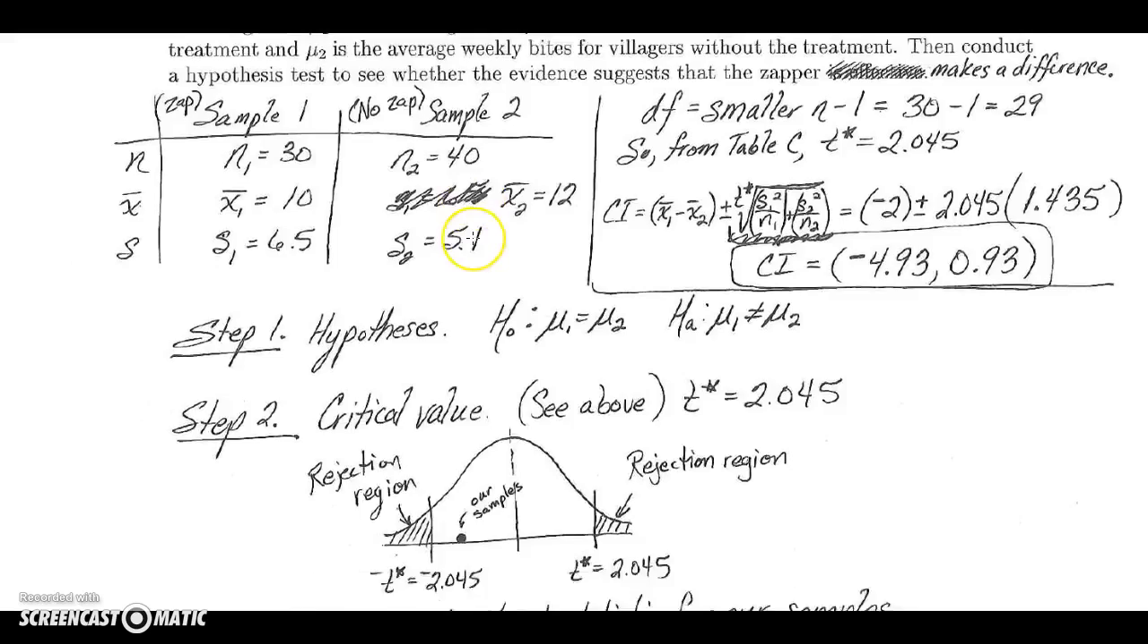Yet, these specific data were made up, but you may want to Google the mosquito zapper. This is a real thing that they're working with and it's pretty intense, especially if you watch the slow-motion video. One final thing here: is it possible we made a mistake here at the end when we failed to reject and we made our conclusion?